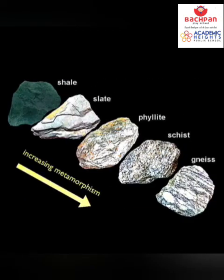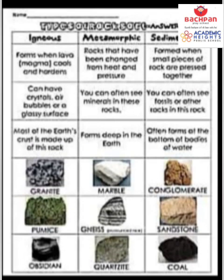Shale under heat and pressure turns into slate, slate again under heat and pressure turns into phyllite, phyllite into schist, and schist again under heat and pressure converts into gneiss — they all belong to the same family, starting from the sedimentary rock shale. I think by the end of this lecture you can differentiate between the three types of rocks: igneous, metamorphic, and sedimentary. The first rocks formed on earth are the igneous rocks, followed by sedimentary and metamorphic. Remember — metamorphic rocks are formed either from igneous or from sedimentary rocks.